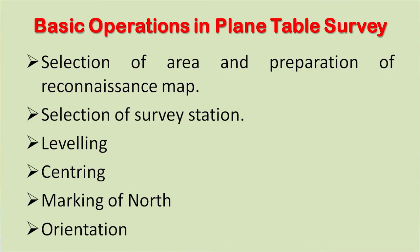Let us now discuss the basic operations in plane table survey. The basic operations include selection of area and preparation of a reconnaissance map, selection of survey station, leveling, centering, and marking of north and orientation of the table. Before beginning any survey, the surveyor has to first select the area to be surveyed and prepare a reconnaissance map, which contains all the objects to be included in the map or the plan.